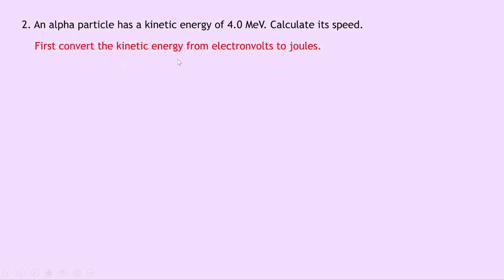Well first we need to convert the kinetic energy from electron volts to joules. So the kinetic energy is 4 mega electron volts which is the same as 4.0 times 10 to the 6, the mega meaning million, times 1.6 times 10 to the minus 19. So to get from electron volts into joules this time we need to multiply by 1.6 times 10 to the minus 19. Putting that into our calculator should give you an answer of 6.4 times 10 to the minus 13 joules.